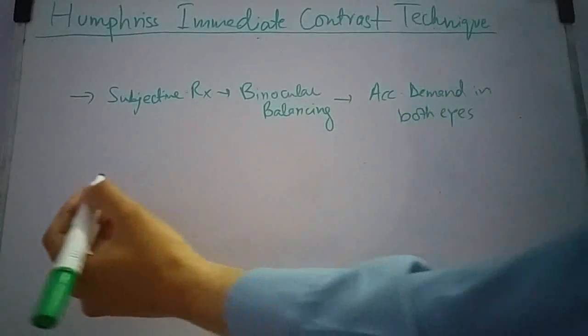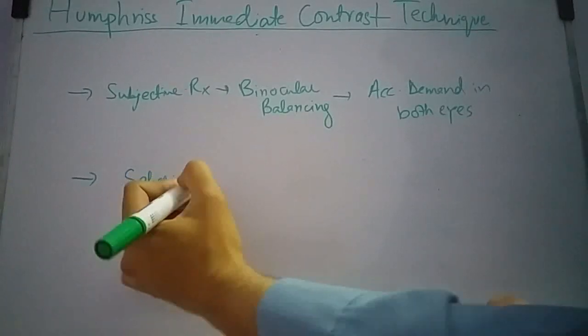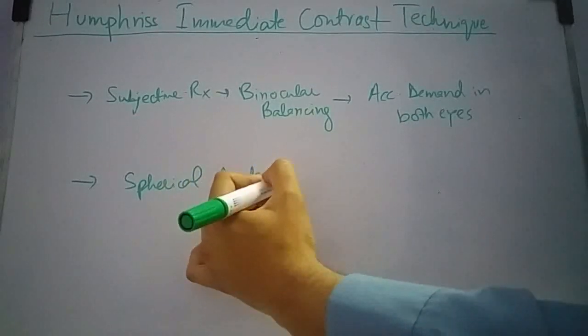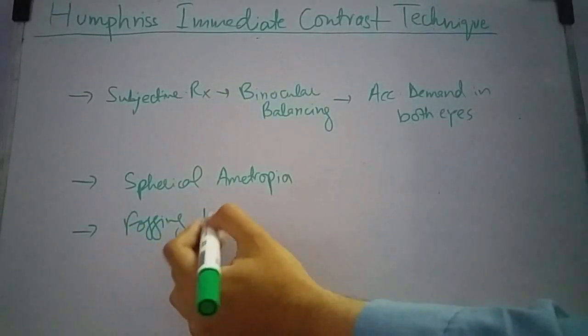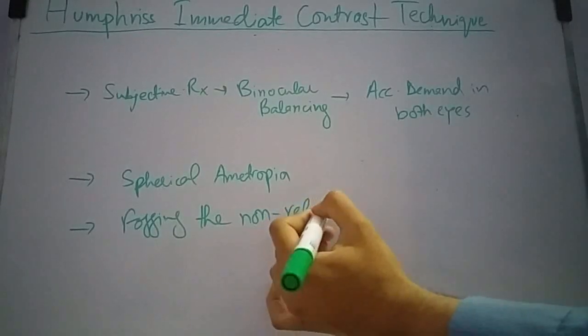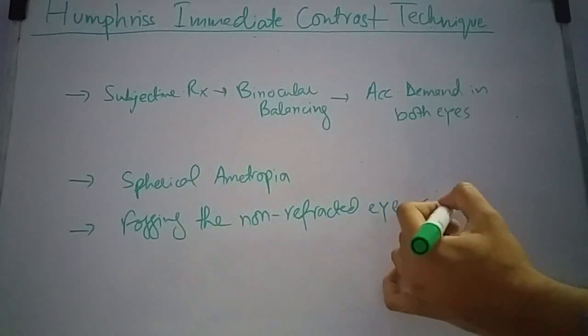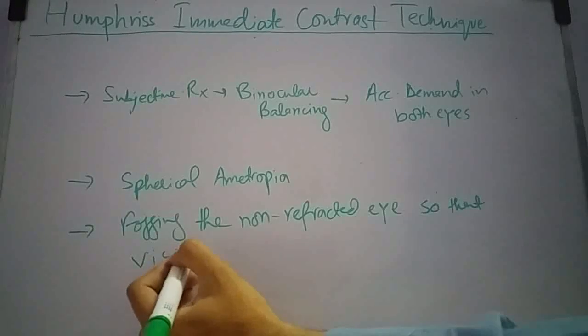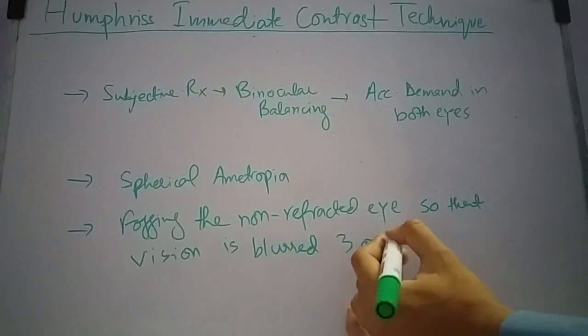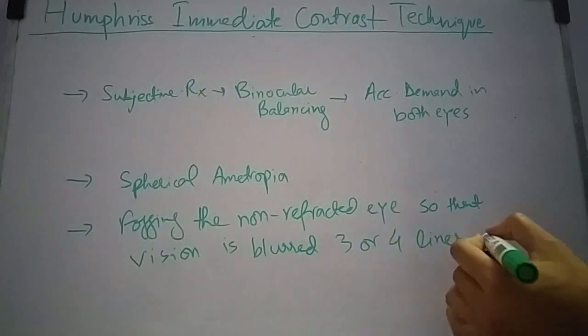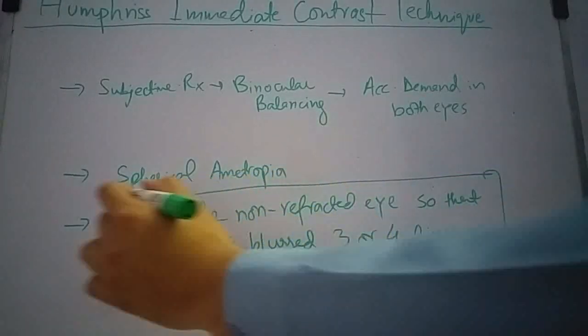This technique is specially designed to balance spherical ametropia and is based on fogging the non-refracted eye so that vision is blurred 3 or 4 lines in that eye. This is the principle of this technique.